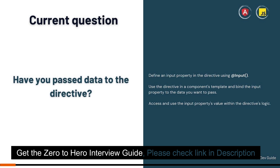How do we pass data to a directive? For example, I want to show two types of buttons — a primary button and a secondary button. You should pass something to your directive so it can determine what kind of CSS to apply on the button. Have you passed some data to a directive?